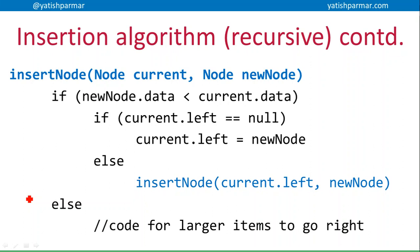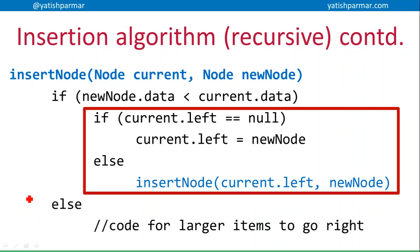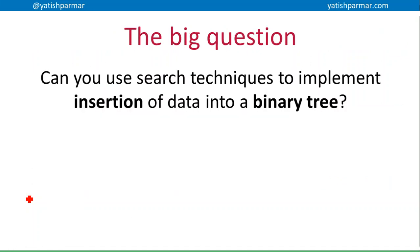The code for larger items going to the right is going to be very similar. If current dot right is null, then current dot right is going to be the new node. Otherwise, we do another recursive call on the right-hand branch to traverse that branch and figure out where the new node is going to go. That needs to be repeated for the right-hand side to traverse that right branch and determine whether the node can be inserted on the right. And that's it - you should be able to use that binary search technique to implement the insertion of data into a binary tree.